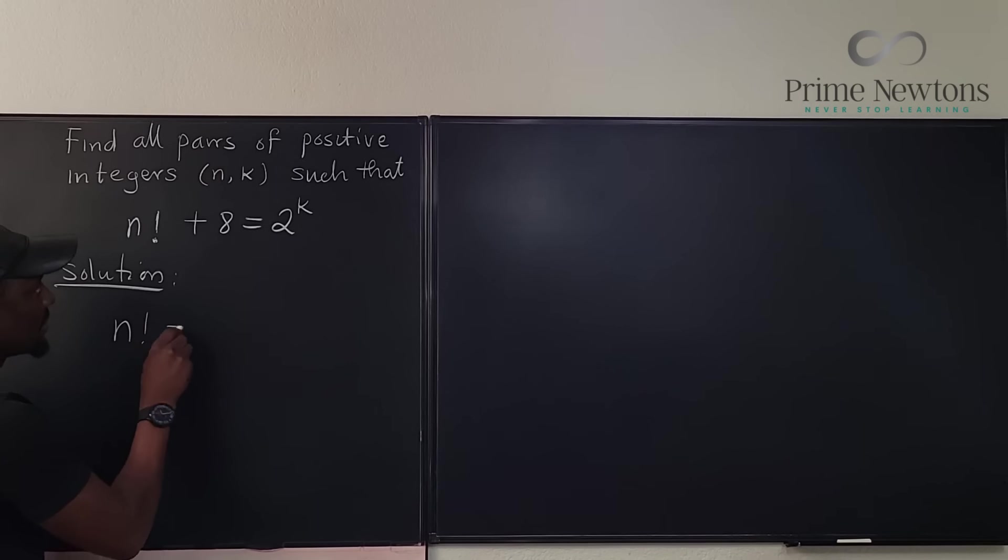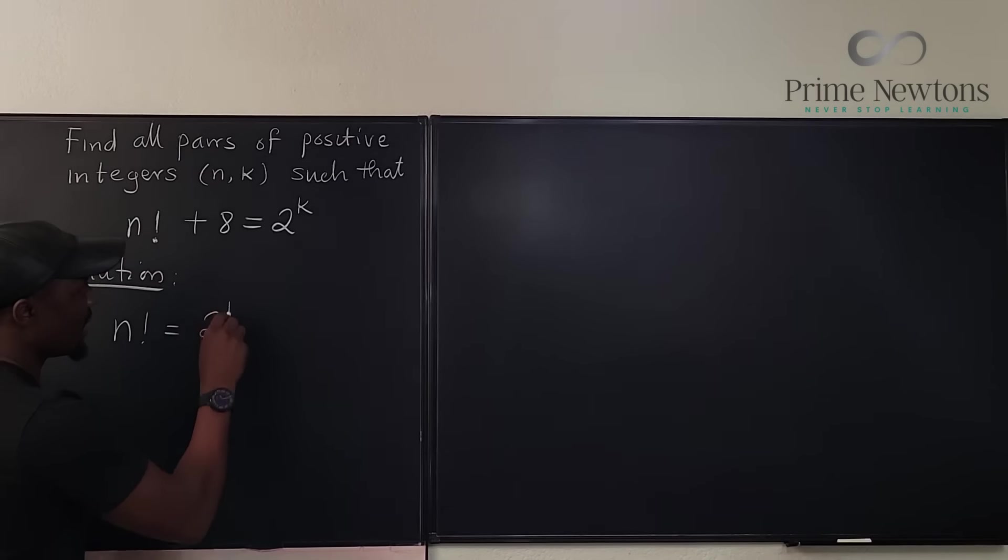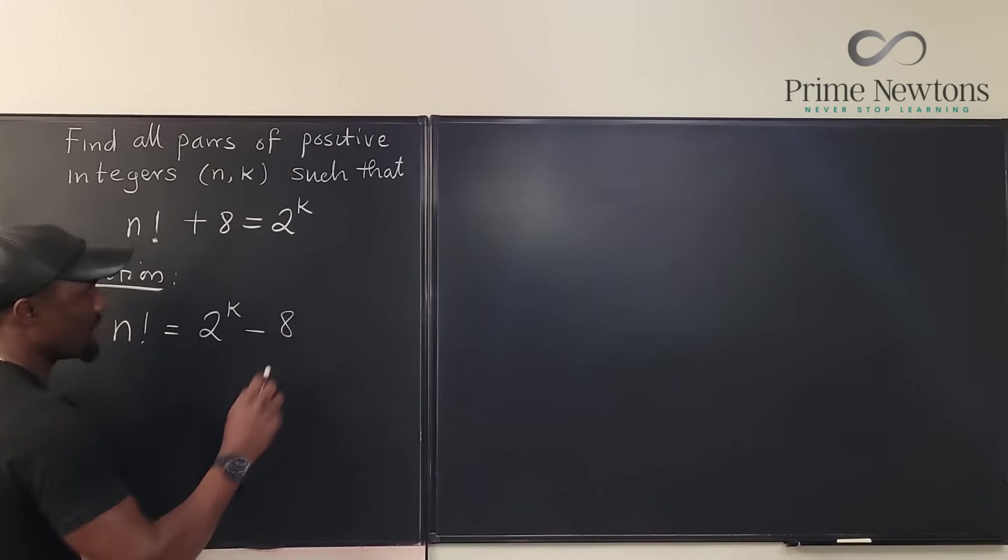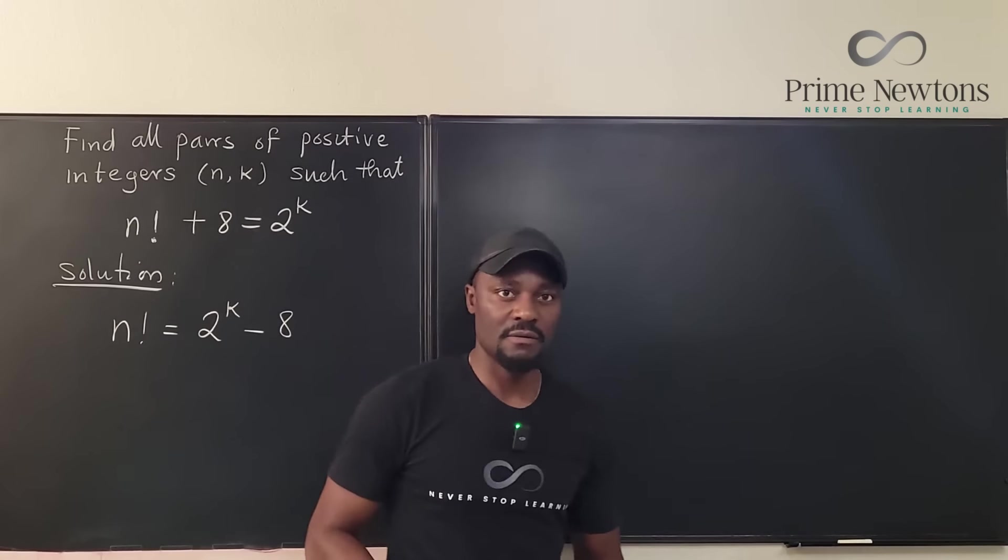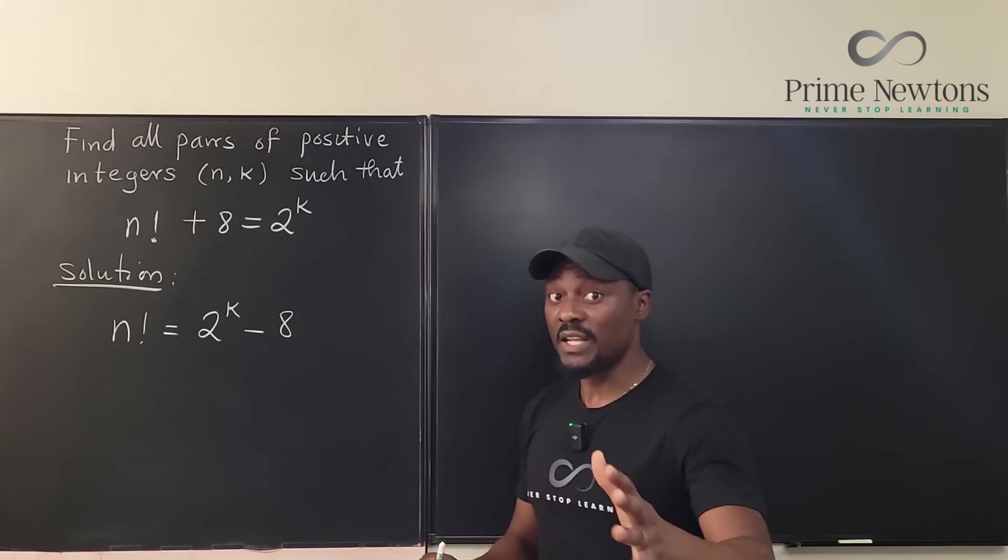I'm going to say n factorial will be equal to 2 to the k minus 8.